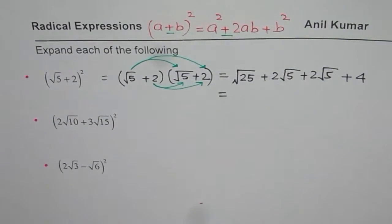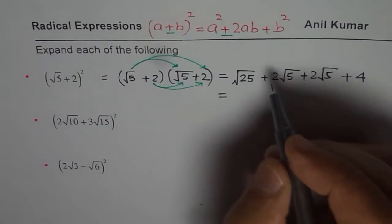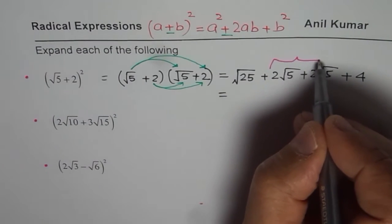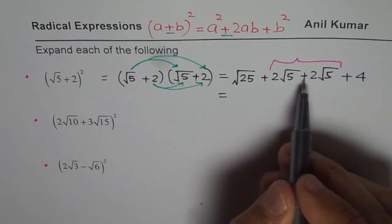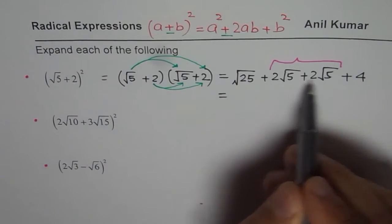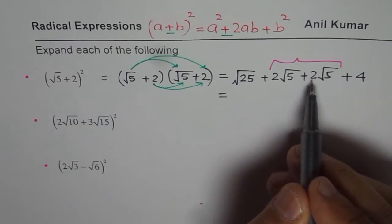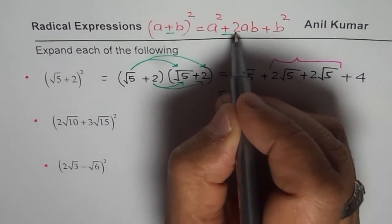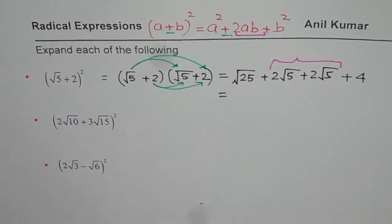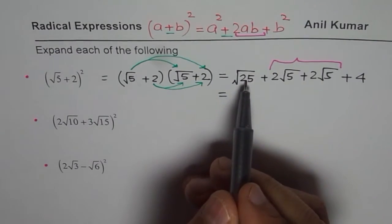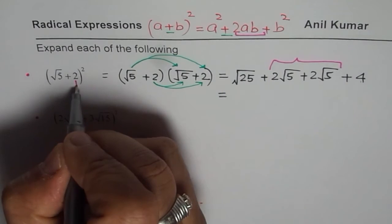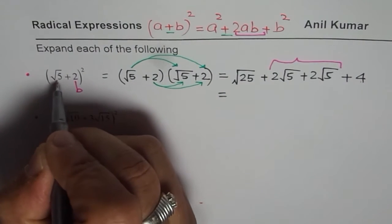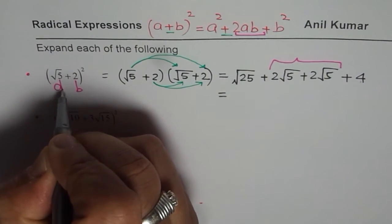What you observe is that the two terms in the center are the same — both positive — and they add up. That is how you get 2ab, that is how you get 2 times ab. The first term is the square of a (which is √5) and the last term is the square of b (which is 2).